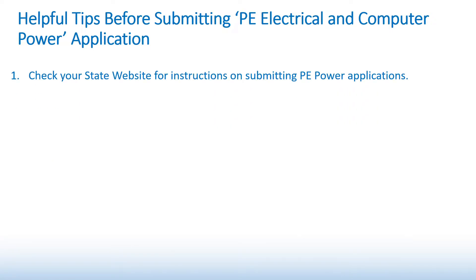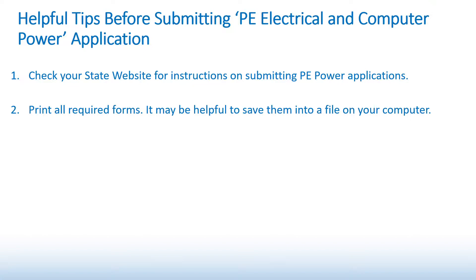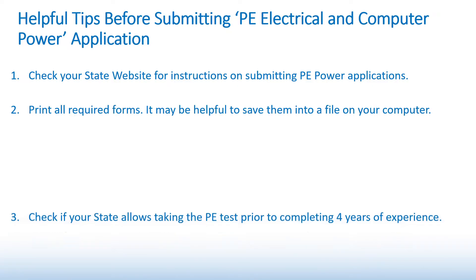The first thing you want to do is check your state website for instructions on submitting the PE Power application. Print all required forms. It may be helpful to save them into a file on your computer for later use.